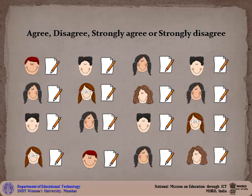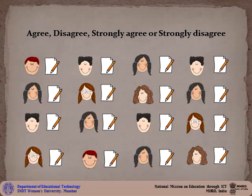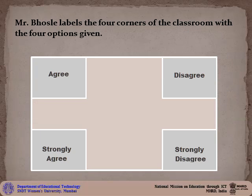To choose an option, the students are allowed to re-read their notes and take time to recall what they have learnt. They are also asked to add explanations that justify their choice. They are expected to do this individually without any kind of discussion with their classmates.